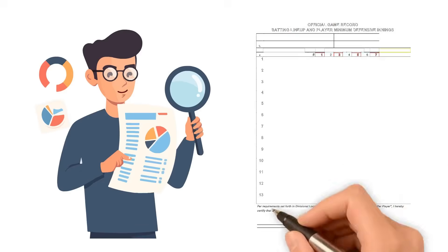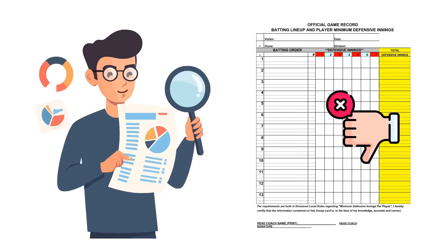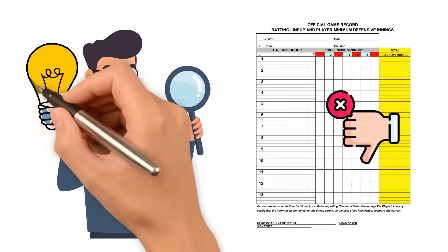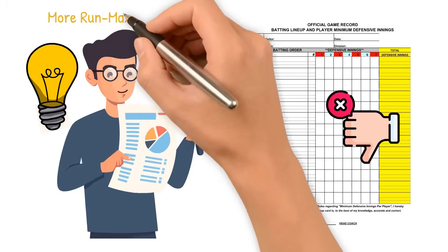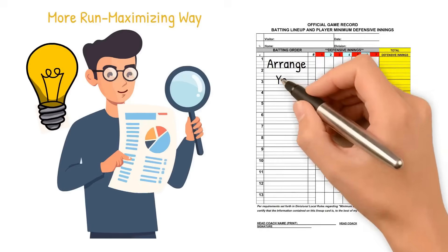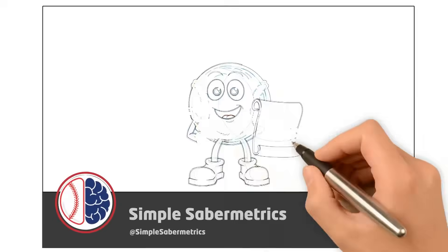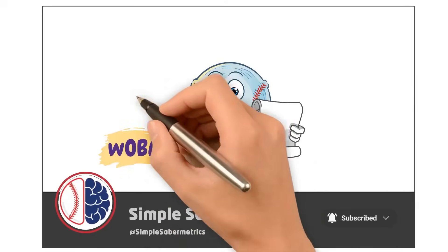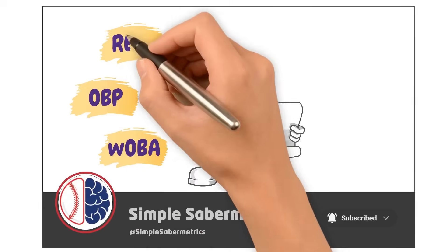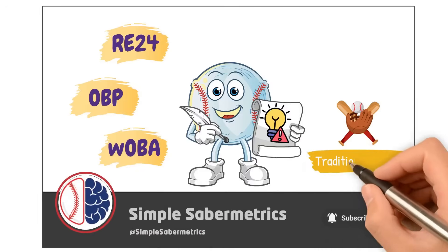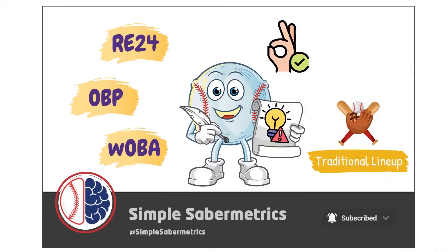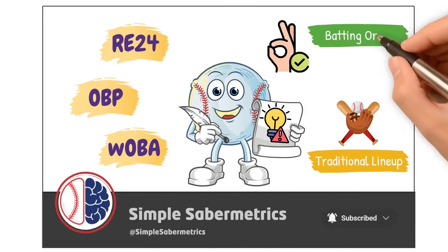Analytics say the traditional batting order is inefficient, and that there's a smarter, more run-maximizing way to arrange your hitters. In this video, we're using wOBA, OBP, and RE24 to challenge baseball's traditional lineup construction and build the perfect modern batting order.